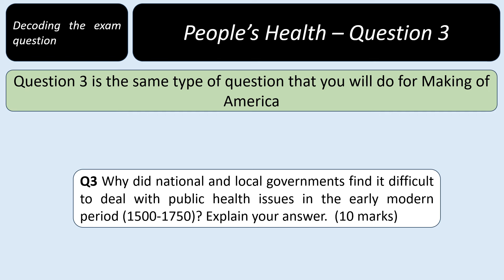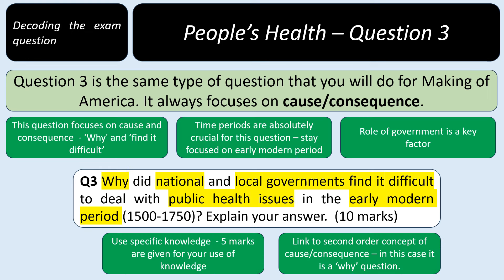As soon as we get the word 'why,' that tells us this is a causation question. The question focus is on cause and consequence, and the key aspect is 'find it difficult.' You really need to read the question carefully — it's asking why governments found it difficult, not just whether they were dealing with public health issues. Time periods are absolutely crucial; you have to stay focused on the early modern period, 1500 to 1750. Don't get confused — this is not an opportunity to write about the 1848 Public Health Act or anything like that.